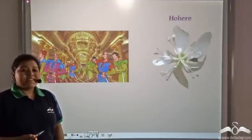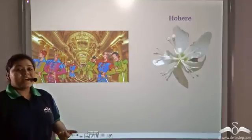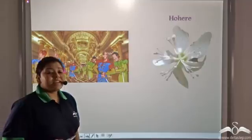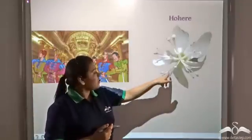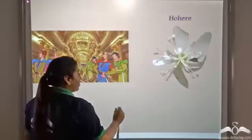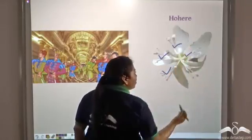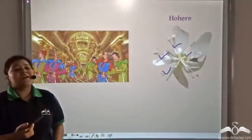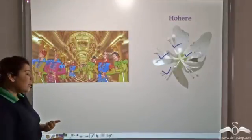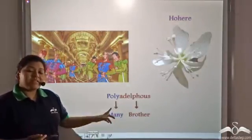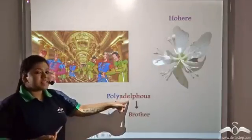Now imagine the king has many queens and each queen has two or three sons. All these stepbrothers stay separately. Similarly, there are flowers like hoher where there are different groups of stamens — multiple groups. This is one group, this is another group, this is the third group, fourth group. This arrangement of stamens is known as polyadelphous, where 'poly' means many and 'adelphous' means brother.